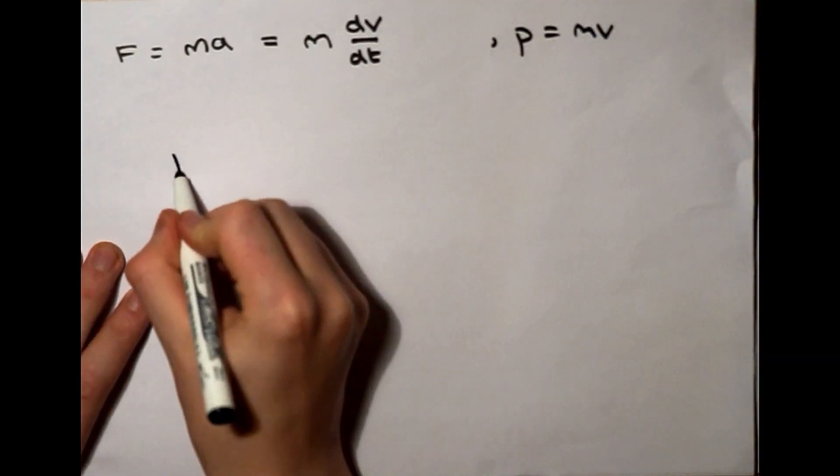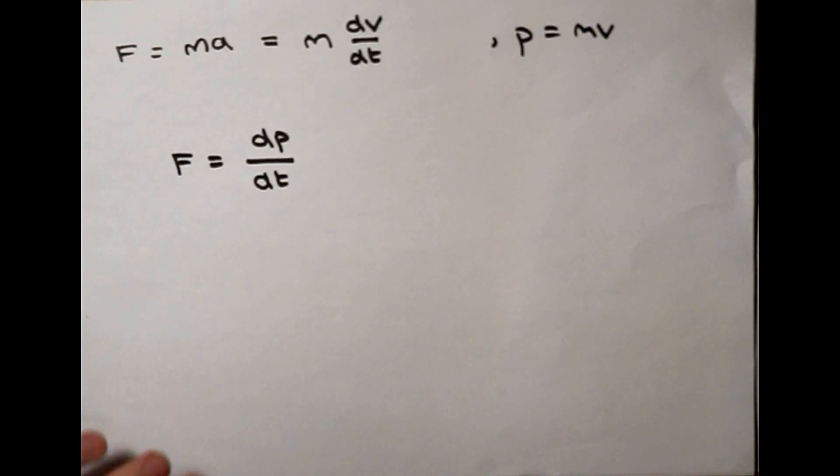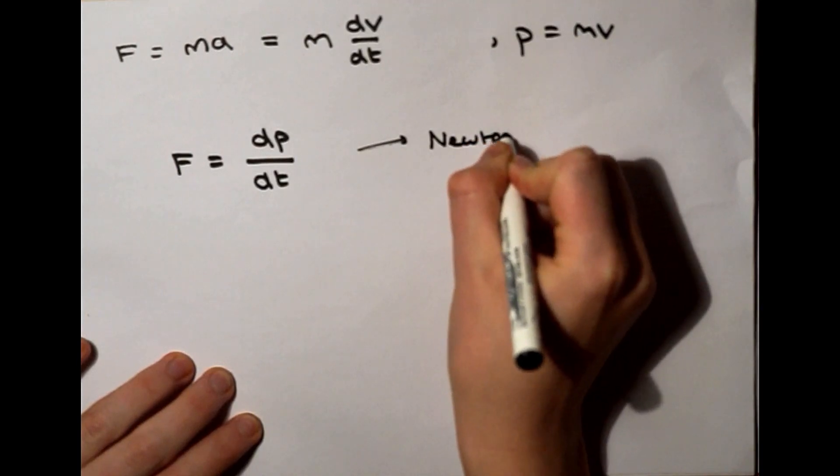and substituting a momentum for mass and velocity, we see that Newton's second law can be rewritten as force equals the derivative of momentum with respect to time.